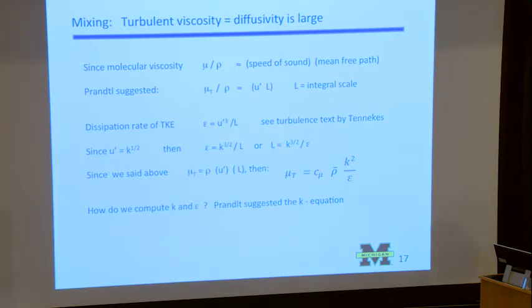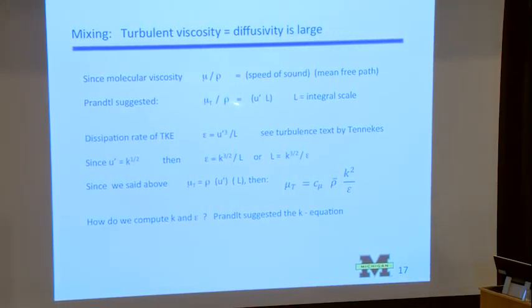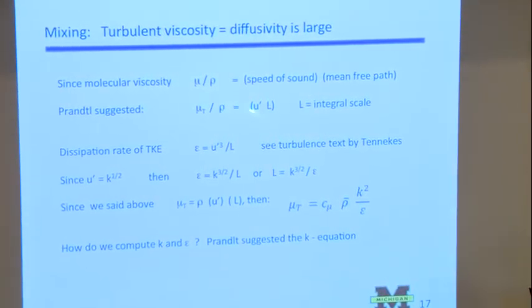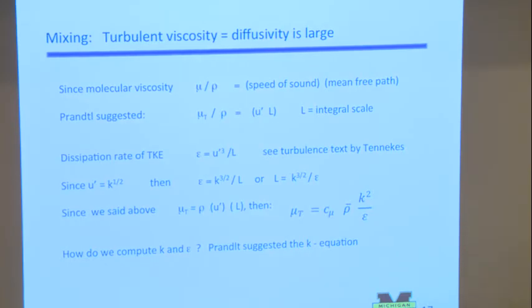And so what Prandtl is suggesting is that the turbulent molecular diffusivity, this is a kinematic viscosity, mu over rho, is U prime L. And that's equal to the diffusivity, the thermal diffusivity, as well as the mass diffusivity. And so this is in meters per second times length, so it's meters squared per second. This is a foundation of turbulent theory that turbulence basically makes the viscosity a thousand times larger than, you know, laminar flow.